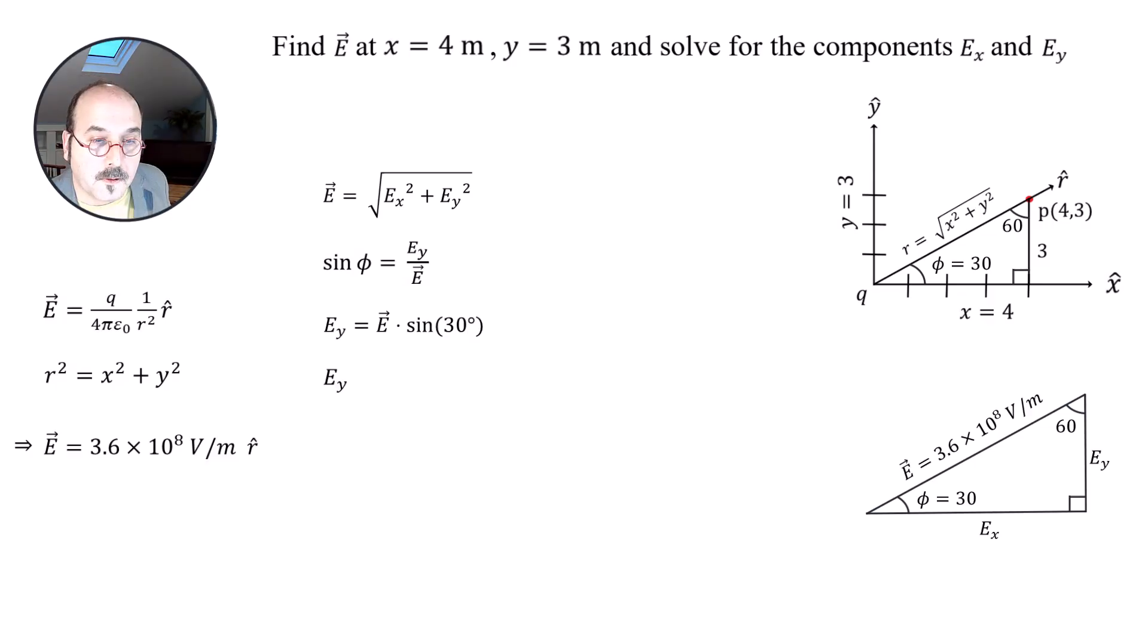So that would be one half times the value of E is 3.6 times 10 to the 8. And that's going to equal half of 3.6 is going to be 1.8 volts per meter. So there's one component, E_Y.